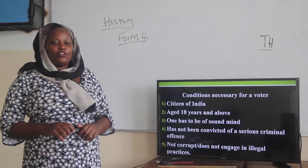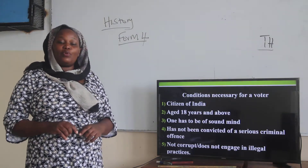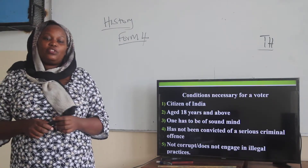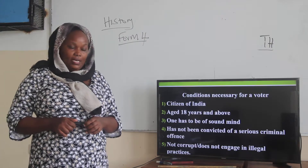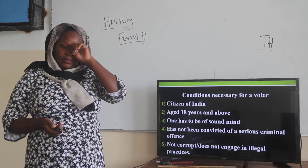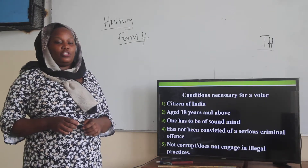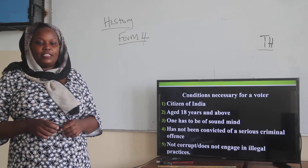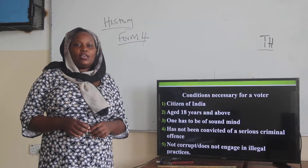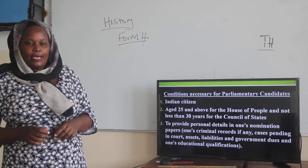Another condition is that you must be of sound mind — you are not insane, you are somebody who can make independent decisions. Also, one must not have been convicted of a serious criminal offence such as murder or robbery. You must not engage in any illegal practice. If you meet those qualifications, you are free to vote or become a voter in India.